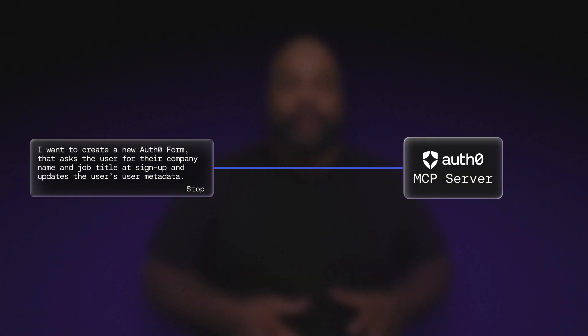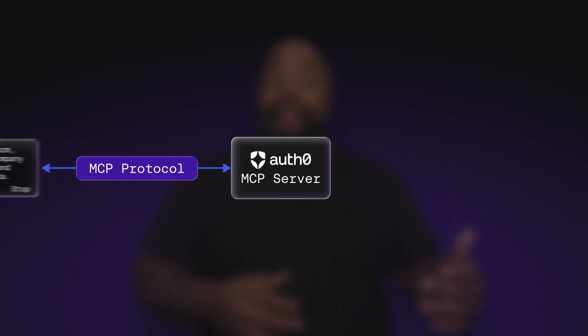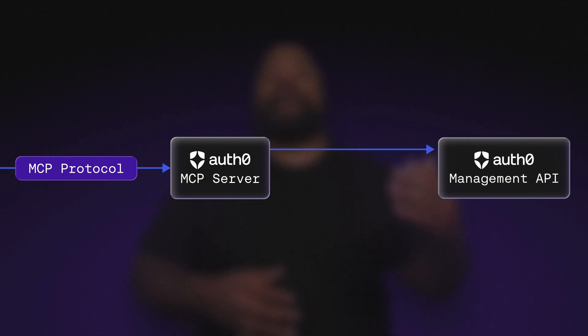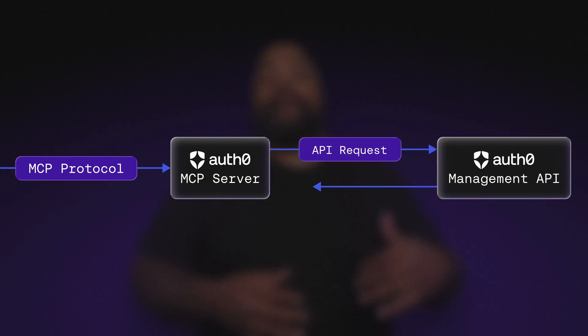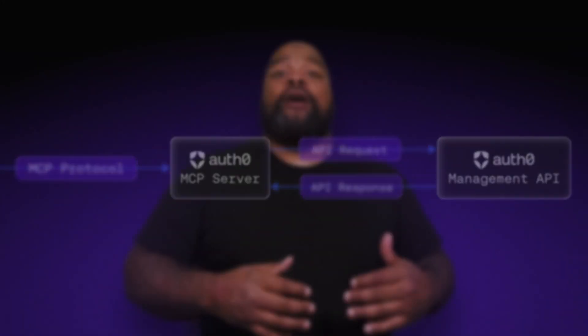When you make those requests, the OffZero MCP server will receive the request in the MCP format and then turn it into an OffZero API management call while enforcing secure authentication, scoping, and permissions through OAuth 2.0. So there's no need to hand over raw API tokens or directly access the OffZero management API. It's like having your own personal OffZero assistant.